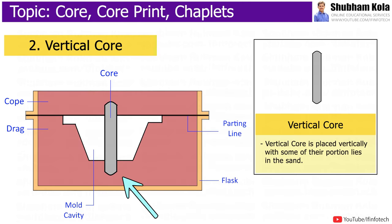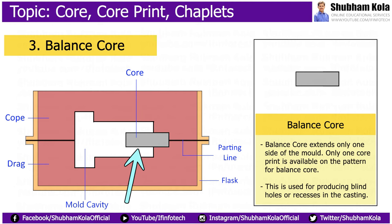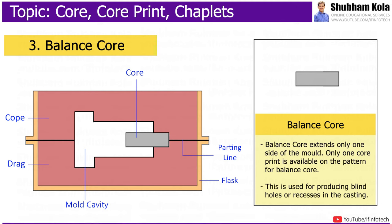The vertical core is placed vertically, with some portion lying in the sand. The balance core extends on one side of the mold, and only one core print is available on the pattern for a balanced core. This is best suitable for castings that have only one side opening, and is used for producing blind holes or recesses in the casting product.